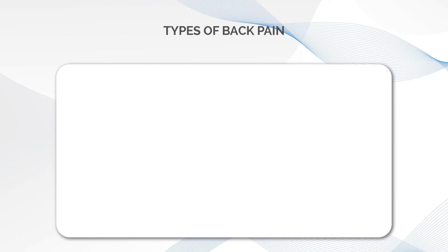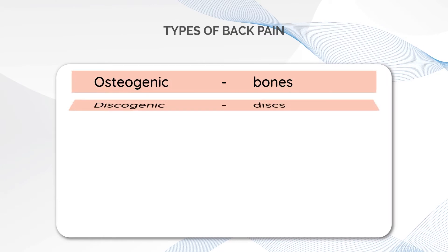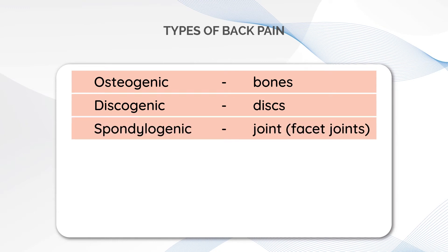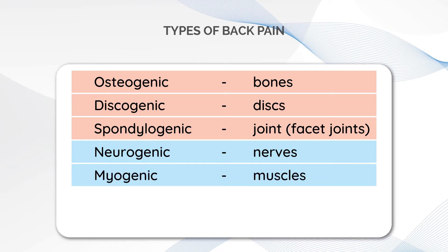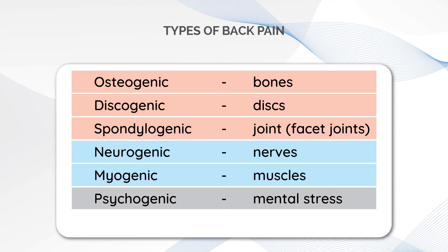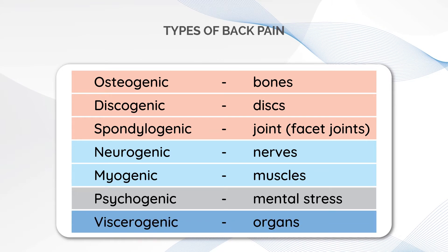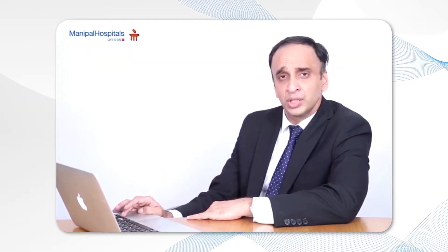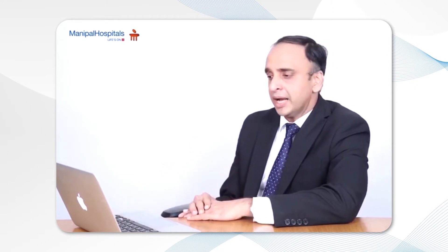There are different types of back pain: osteogenic which is pain from the bone, discogenic which comes from the disc, spondylogenic which comes from the joints, neurogenic which comes from the nerves, myogenic which comes from the muscles, psychogenic which comes from mental stress, viscerogenic that comes from other organs, and vasculogenic where blood vessels around the spine can also present as back pain. Back pain is not that simple — there are so many different possibilities, and as a spine specialist it is our job to identify exactly what is causing the pain.